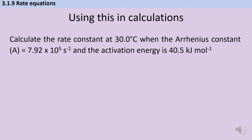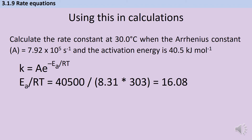Let's look at how we'd actually use this in practice to calculate the rate constant K for a given temperature, having been given the Arrhenius constant and the activation energy. The way I would approach this is to work out the value of the index first, because there's a lot that can go wrong putting it all into the calculator at once. My value for activation energy divided by RT is going to be 40,500 — because the units need to be joules per mole, not kilojoules per mole — divided by 8.31, the gas constant, multiplied by 303, because the temperature needs to be in Kelvin, so I've added 273 to 30 degrees C.